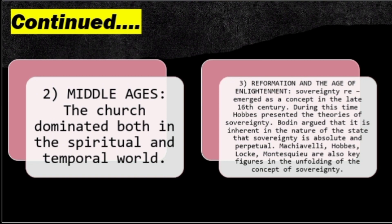Machiavelli laid down the rules and principles he offered to the prince. One of the important pieces of advice Machiavelli gave was that a ruler must combine the qualities of a lion and a fox — a ruler should be very brave like a lion, with no features of cowardice, and should also have the cleverness of a fox in decision making. This was one of the key pieces of advice Machiavelli gave to the king.